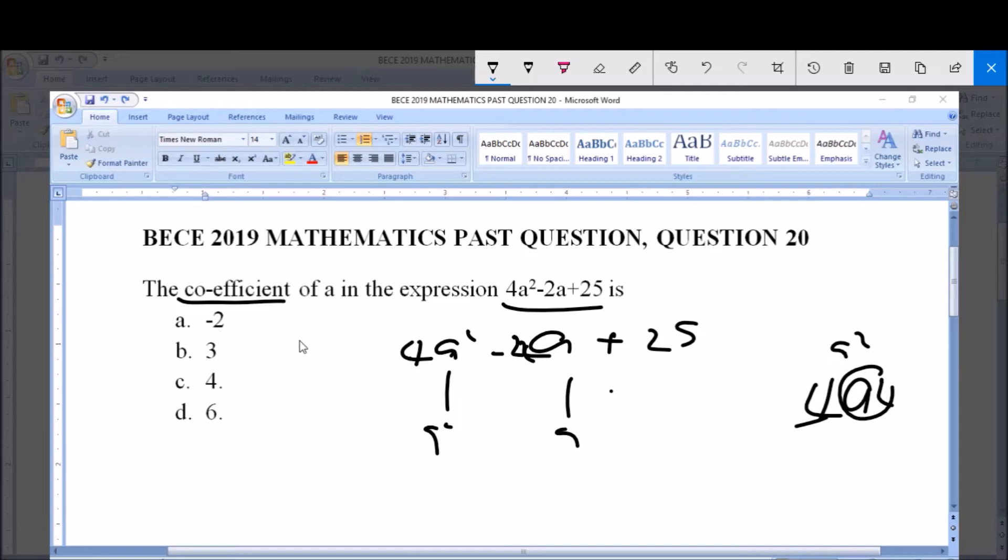But the question asks us to find the coefficient of a now. So we have to look for the coefficient of this a here, this a not a squared now. And here now we have 2 before the a.